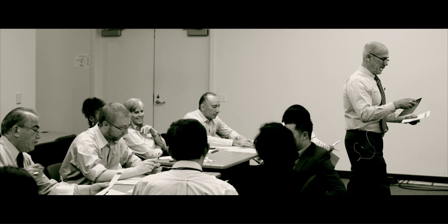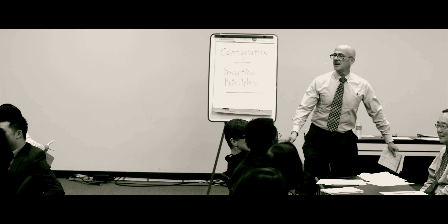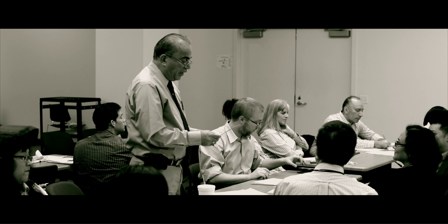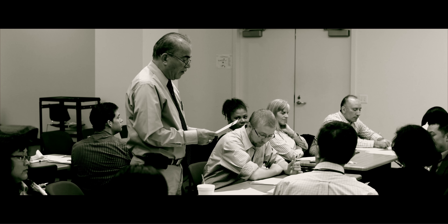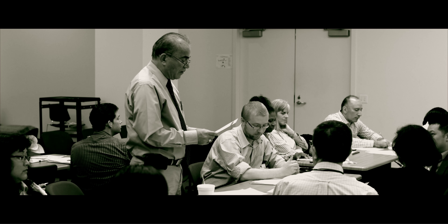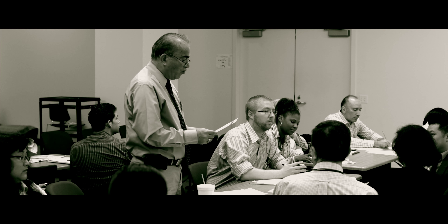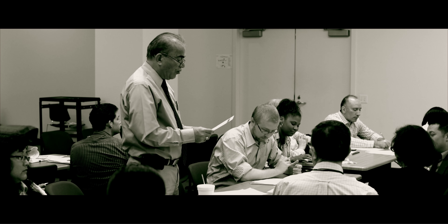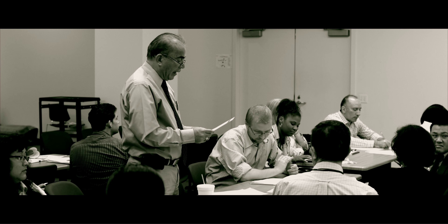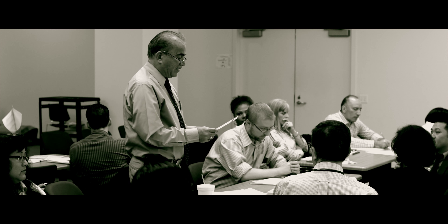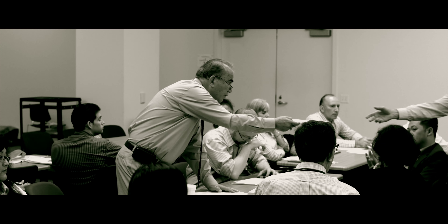Blue signals — when communicating in the blue style, the person often asks how others will be affected and whether they are being included in the decision-making process. They like to chat and build a personal connection before getting on task or discussing business. They often emote and present things in terms of feelings. They tend to clam up if they sense hostility or rudeness from others. They like people-oriented presentations.